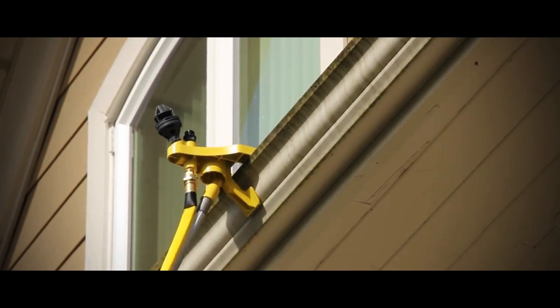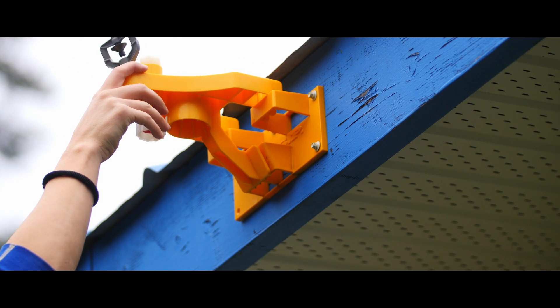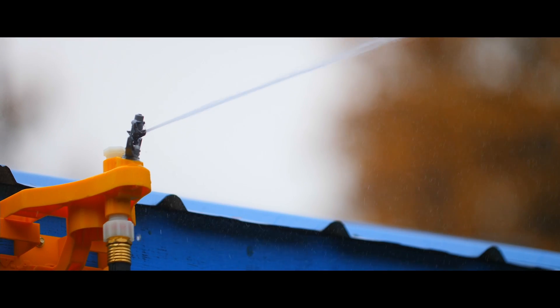You can either hook the sprinkler system onto your gutters or fasten them to your fascia boards or fences. Then simply turn the water on and you're ready to go.